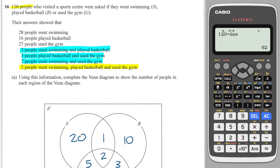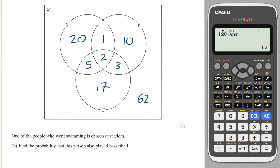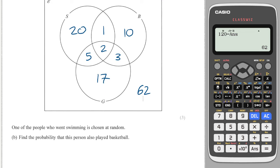Now we've been asked to find the probability: one of the people who went swimming is chosen at random. Before I do anything, I'm just going to color in all the people that went swimming, so these are the people which we're selecting from. It says find the probability this person also played basketball. For the people that play basketball in that yellow section, that is 3 out of 28 in total.